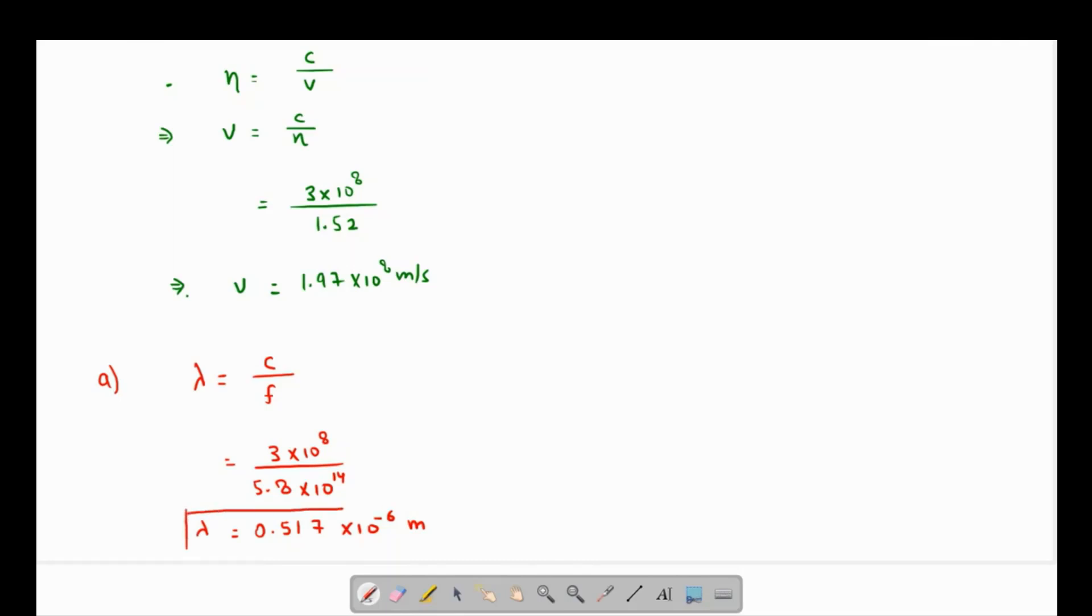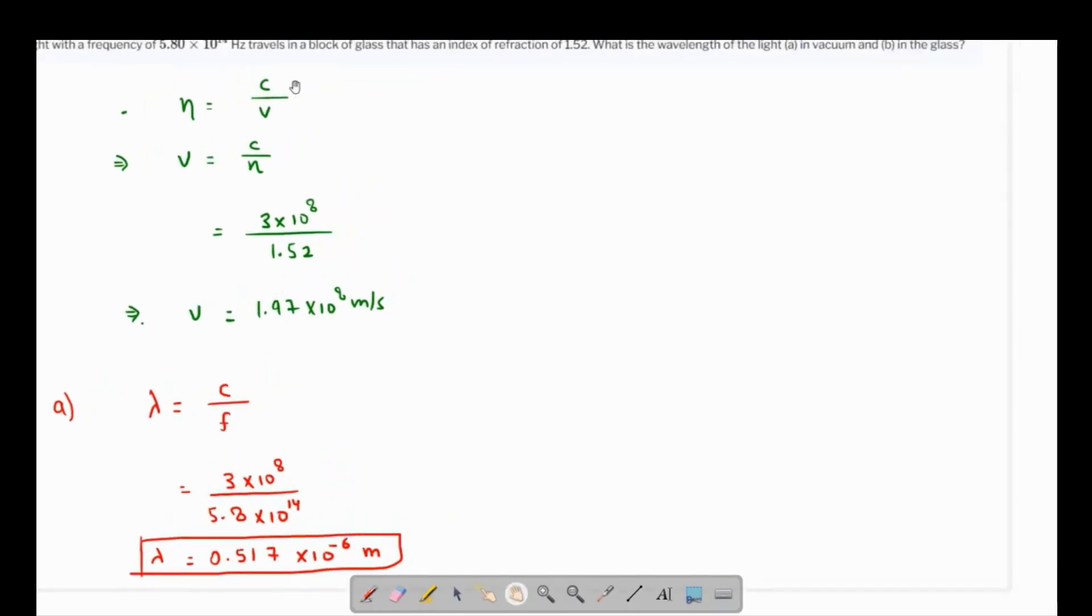So this is the required wavelength in vacuum. And they're also interested in finding the wavelength in the glass. So we gotta use the same formula; the only difference is the speed will change.